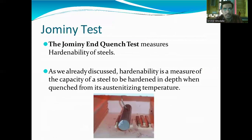Next is the Jomini test, named after the scientist who discovered the test for hardenability. The Jomini End-Quench test measures the hardenability of steel. Hardenability is the measure of the capacity of steel to be hardened in depth when quenched from the austenitizing temperature.